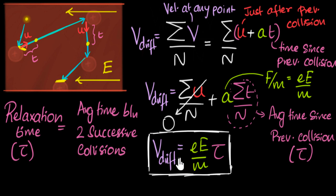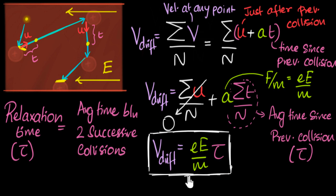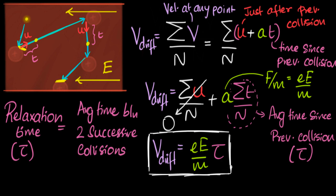The second thing to note is that drift velocity depends on the strength of the electric field — a stronger field means electrons drift faster, which makes sense since we'd expect more current. Third, drift velocity also depends on relaxation time: if relaxation time increases, there is more time between successive collisions on average, meaning electrons can spend more time accelerating and gaining speed, so the average drift speed increases.